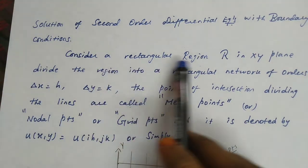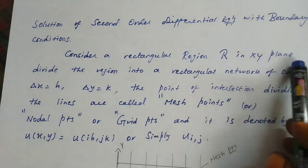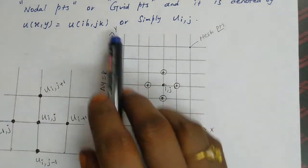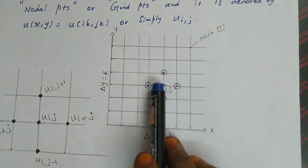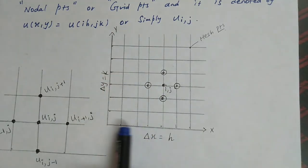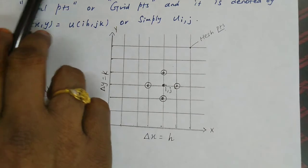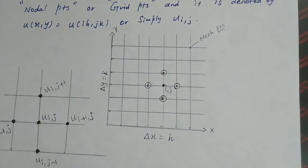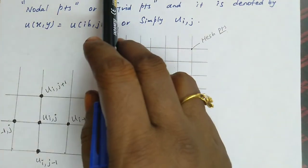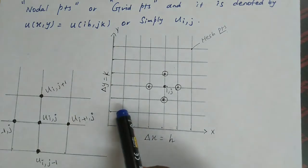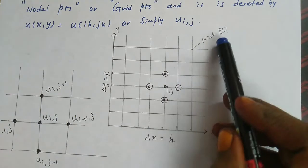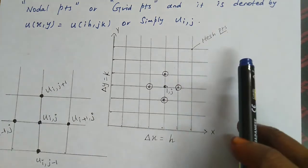We are considering a rectangular region in the XY plane. Look at this diagram. Taking the X axis and Y axis, draw the lines to make a rectangular network. The distance between the X coordinates is H and the distance between the Y coordinates is K. The points of intersection of the dividing lines are called mesh points, grid points, or nodal points.